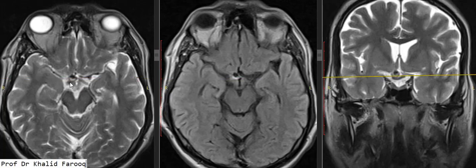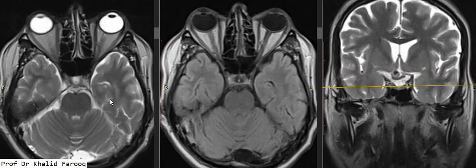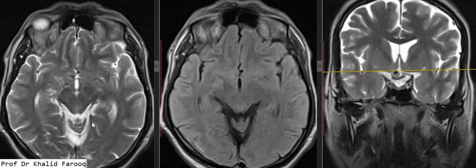So this is the area of the optic chiasm. Whenever a patient presents with the history of visual problems, we will have to trace the entire course from the optic nerves up to the occipital lobes.